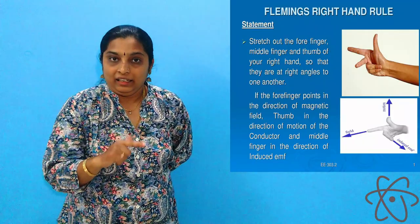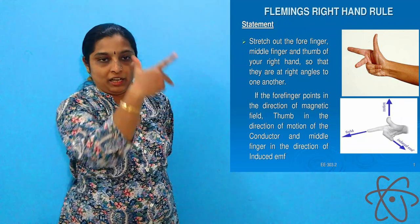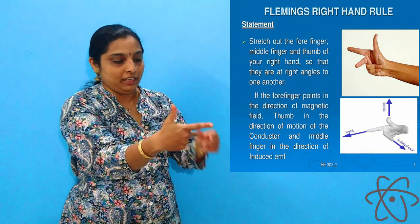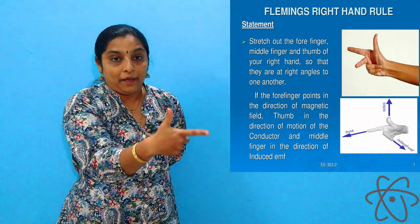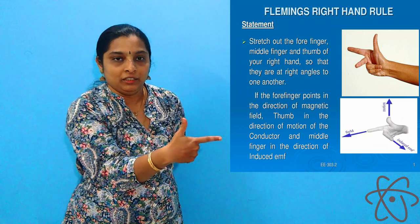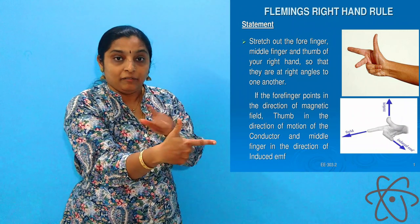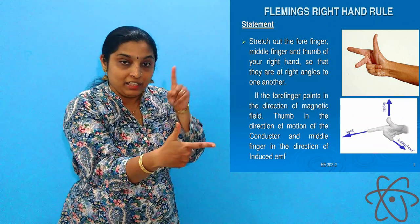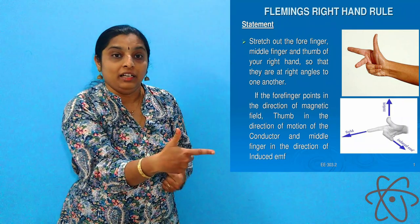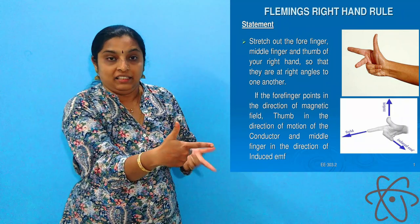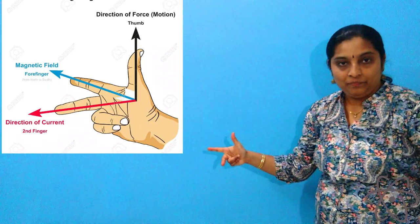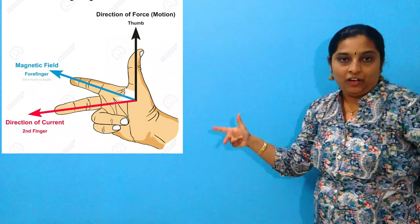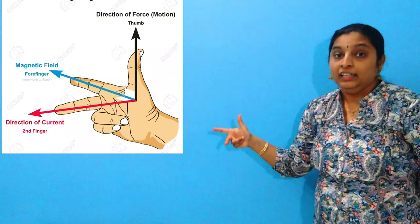Like earlier, we have to stretch all three fingers — the middle finger, the forefinger, and the thumb of our right hand — mutually perpendicular to each other. Experiments have shown that the induced current will be highest when they are mutually perpendicular. You have to stretch your right hand in this way.